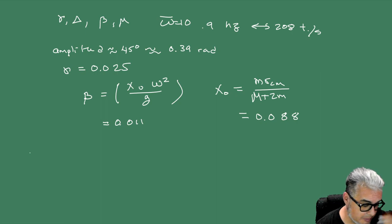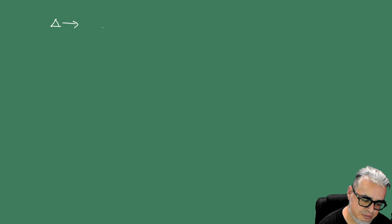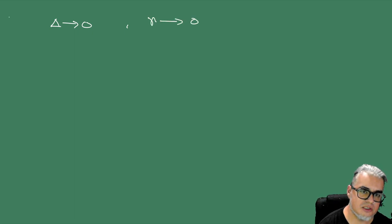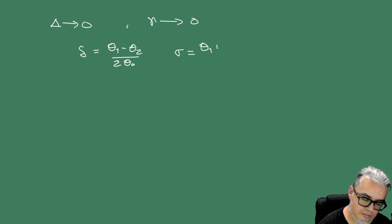Lo que vamos a tener es que se van a escalar las variables de cierta forma, aproximando delta a 0 y gamma a 0 como caso trivial. Definimos Delta como la diferencia de los ángulos pesada con theta_0, y Sigma como el promedio pesado por theta_0.